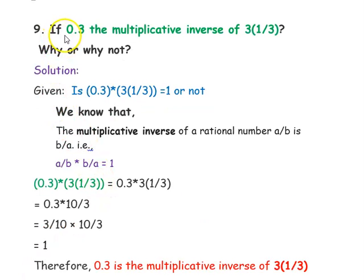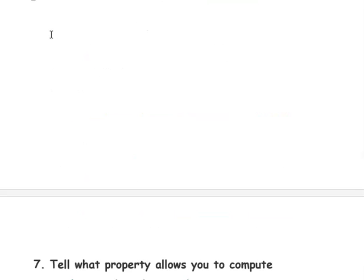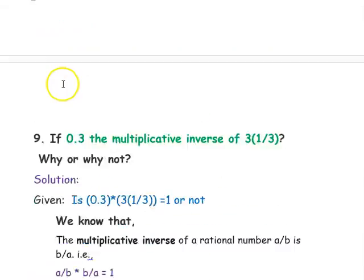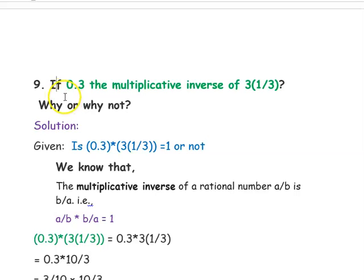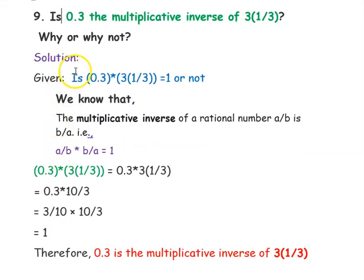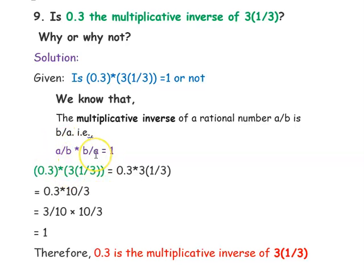The next question is: is 0.3 the multiplicative inverse of 3⅓? Why or why not? We will check whether 0.3 × 3⅓ equals 1 or not. We know that the multiplicative inverse of a rational number a/b is b/a, and if you multiply the number and its multiplicative inverse you should get 1.